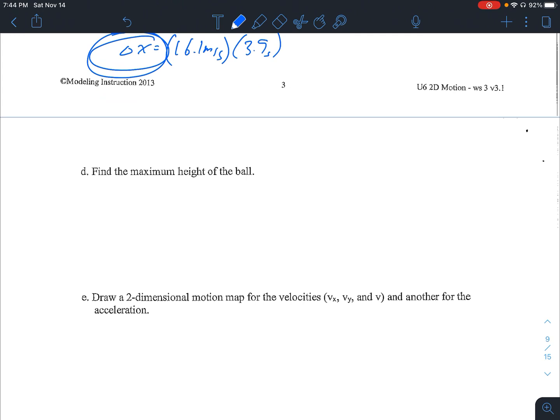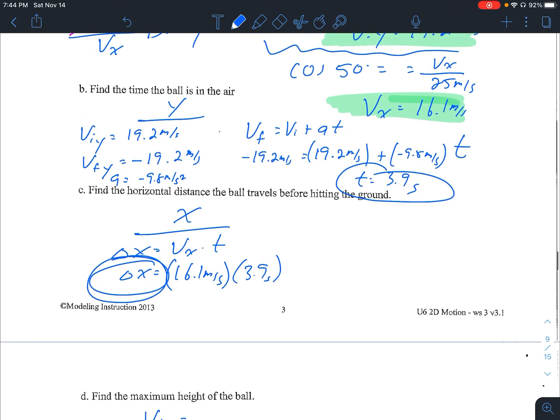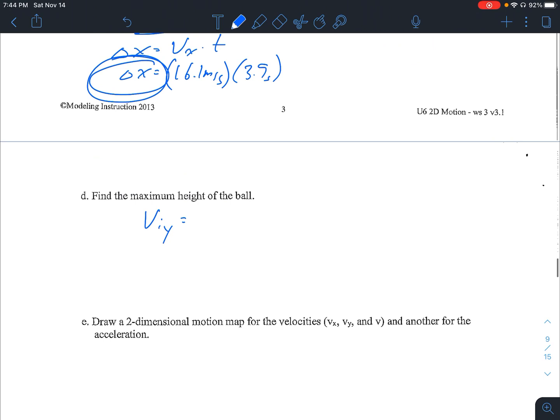For part D, we're looking for the maximum height of the ball. Again, there's different ways you can go about this. You can look at it as your initial velocity in the y direction was the 19.2. Now we can define our final velocity in the y direction as zero. We know the time it takes to go up and down, so we can cut that time in half if we wanted.